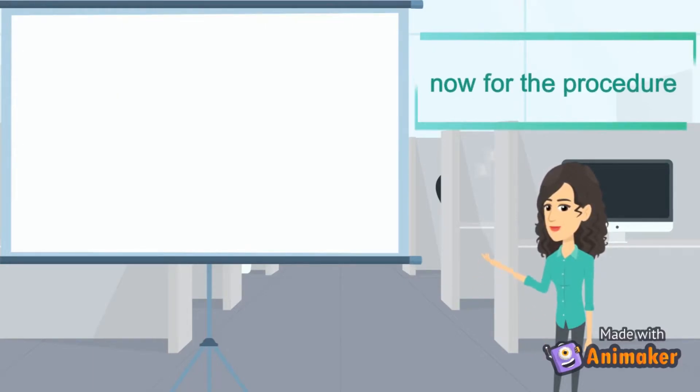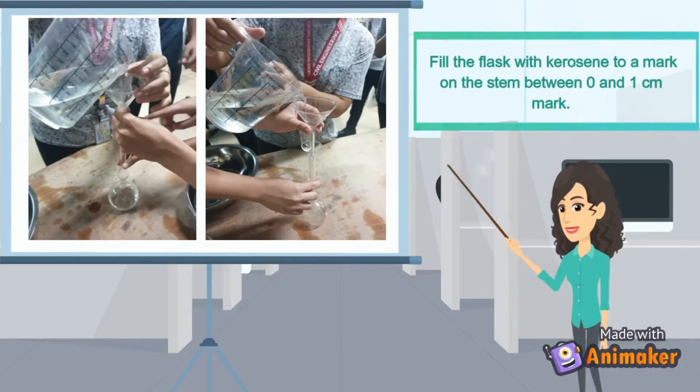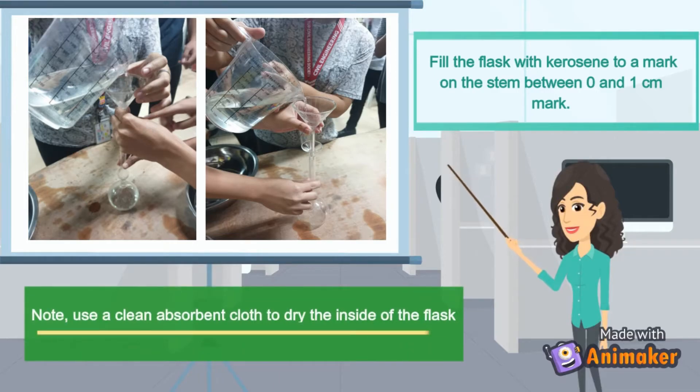Now, for the procedure, fill the flask with kerosene to a mark on the stem between 0 and 1 cm mark. Note, use a clean absorbent cloth to dry the inside of the flask.